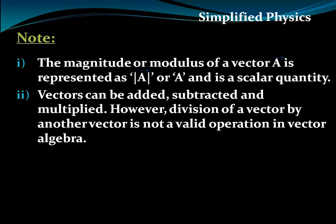In general, the magnitude or modulus of a vector is represented by two bars with the vector symbol, or simply by the alphabet without the arrow — and in general it is a scalar quantity. Vectors can be added, subtracted, and multiplied, but division of one vector by another vector is not defined and is not a valid operation, simply because direction cannot be divided.